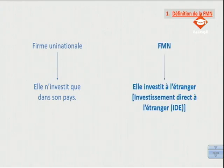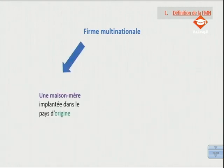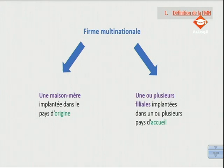Par contre, une firme multinationale, c'est une entreprise qui investit à l'étranger en réalisant ce qu'on appelle un investissement direct à l'étranger. La grande différence entre une firme uninationale et une firme multinationale ou transnationale, c'est que la firme uninationale n'investit que dans son pays, alors que la firme multinationale investit à l'étranger. Elle est constituée d'une société mère implantée dans le pays d'origine, et d'au moins une filiale implantée dans un pays d'accueil, grâce à des investissements directs à l'étranger.